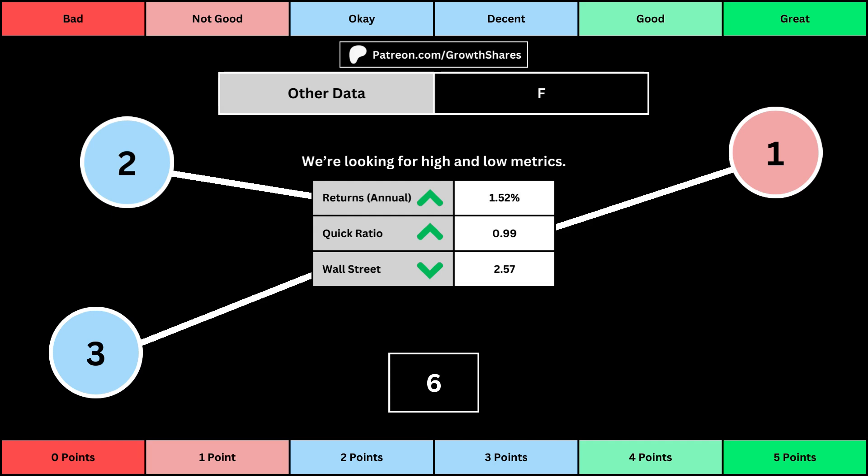We want the quick ratio high so that it's easy to get rid of those debts. And then Wall Street is the average consensus rating Wall Street analysts give the stock, from a strong buy of 1 to a strong sell of 5. Again, the better values get a higher point total.